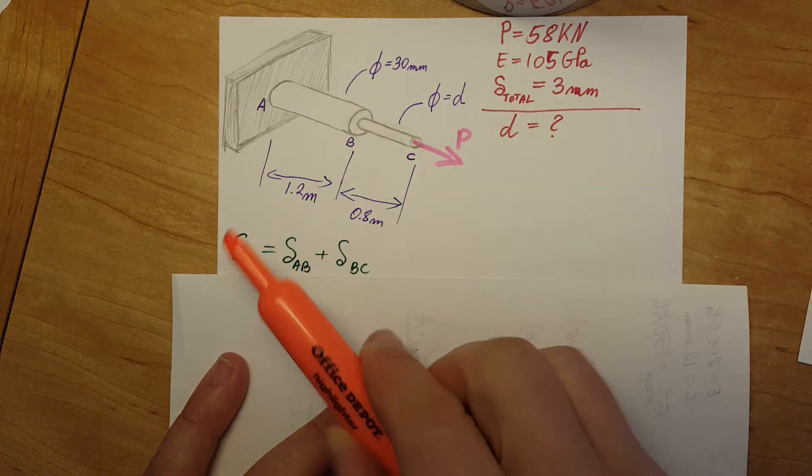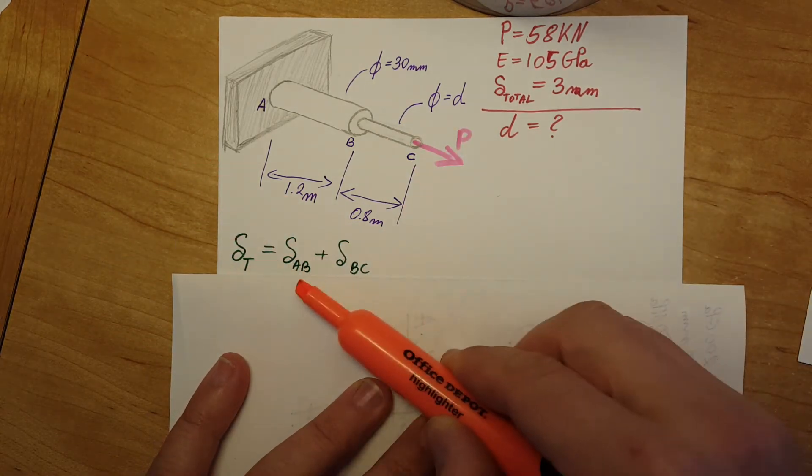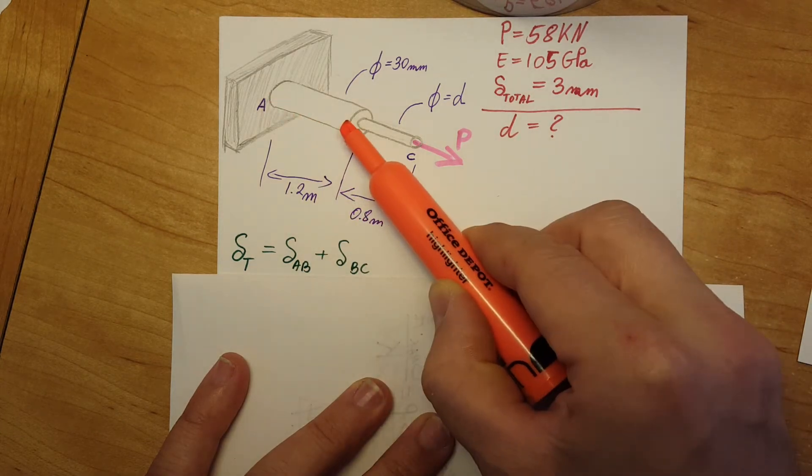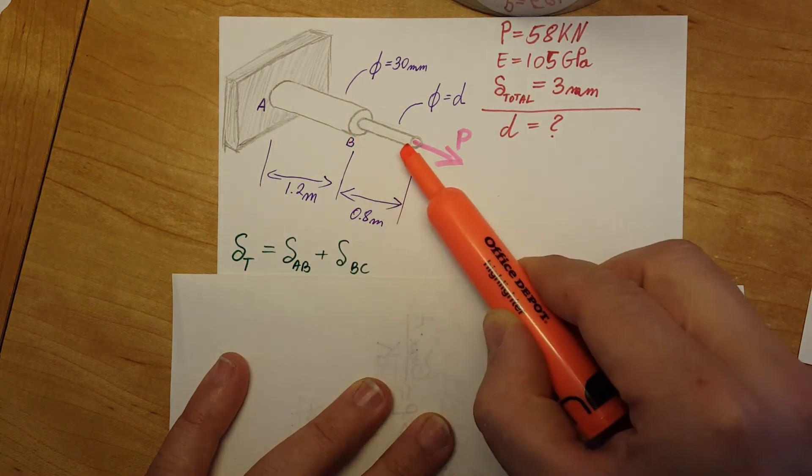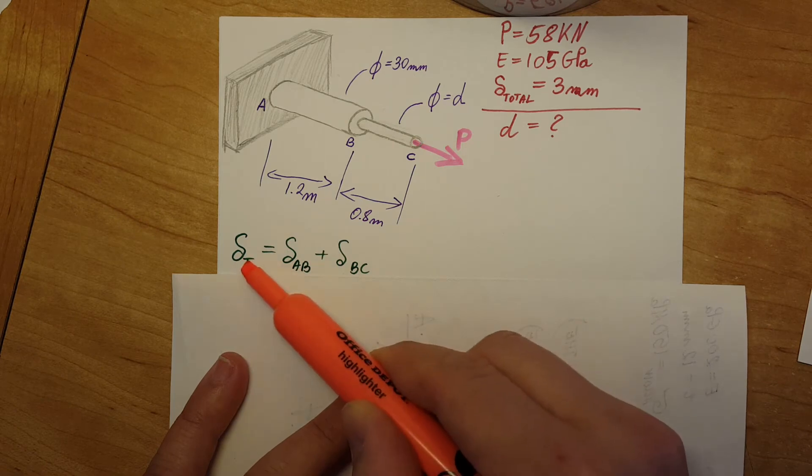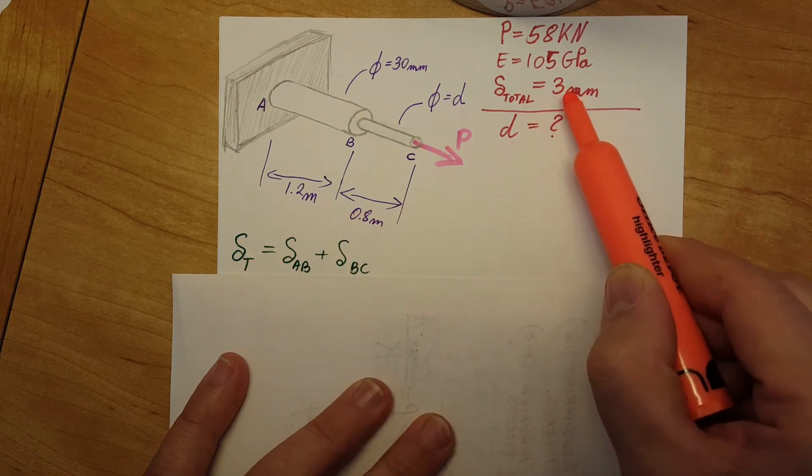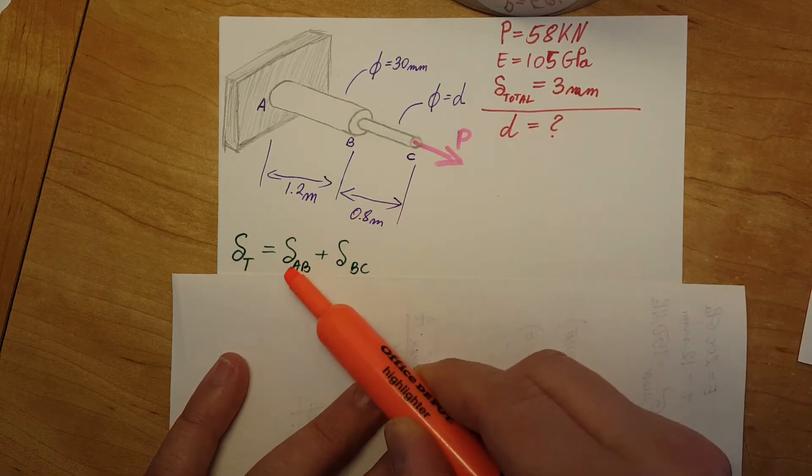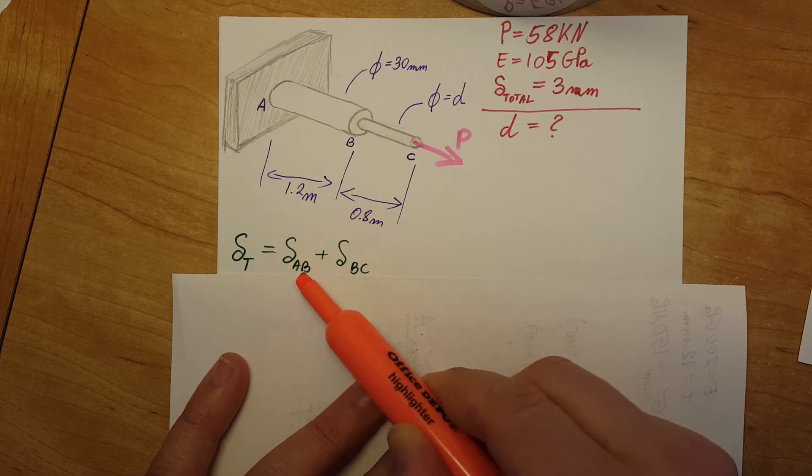it down. Total deformation equals the deformation in part AB plus the deformation in BC. Now this part we know it's three millimeters. Let's take a look at the next one, deformation in AB.